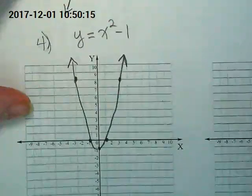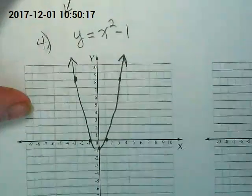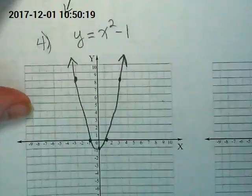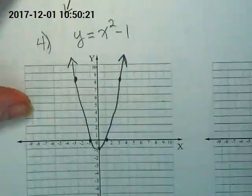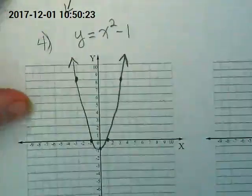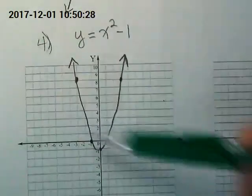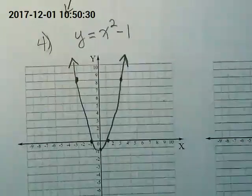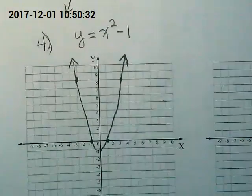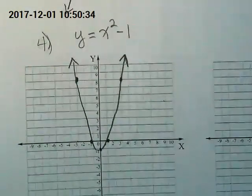So absolute value graphs always are a V, and when you have an exponent of 2, you're always going to get a U. It's a special feature that happens because of what's happening with the rules that are within them. So once we saw this, if you know that that's going to be a U, you should be pretty confident that you puzzled through this correctly.